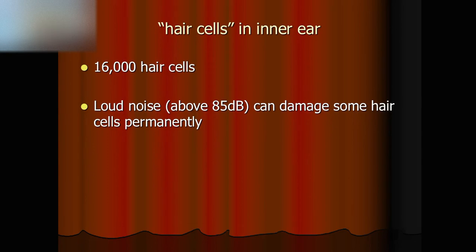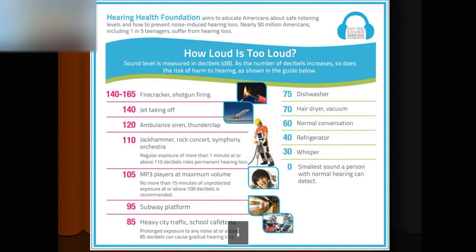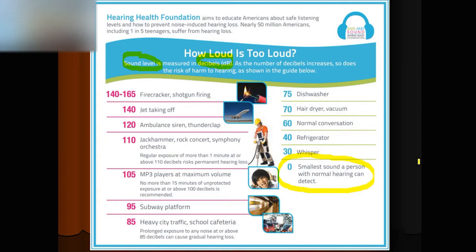What is 85 dB? How is it measured? Here is a way to tell. Zero dB is the threshold of normal hearing. 30 dB is a whisper. 40 dB is a refrigerator. 60 dB is normal conversation, like my talking. 70 dB is a highway or vacuum cleaner. 75 dB is a dishwasher.